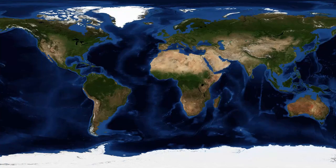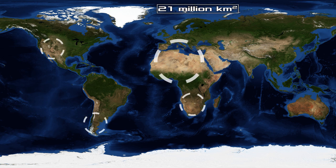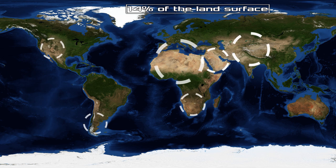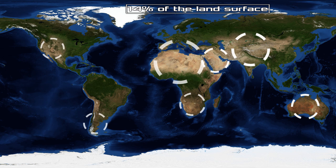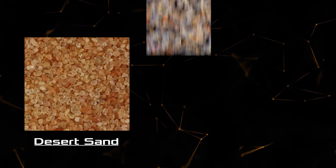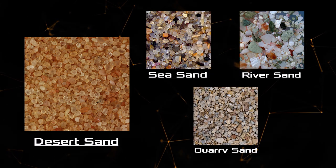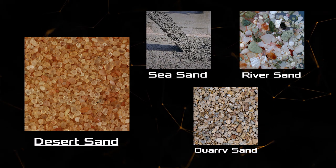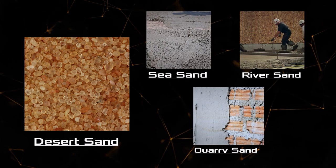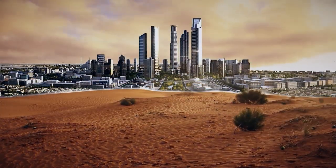All this sand has to come from somewhere, and deserts come to mind — the largest terrestrial biome on earth, covering about 14 percent of the land surface. But not everything is so simple. Large and durable concrete buildings cannot be built using desert sand. Desert sand has a very smooth structure, while sea, river, and quarry sand have a rougher, jagged surface with edges, which allows the sand to be more securely fixed in cement solutions and compacted layers. Only sand grains that cling to each other are suitable for construction.